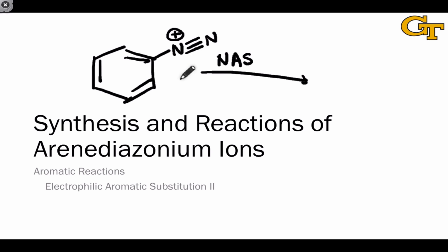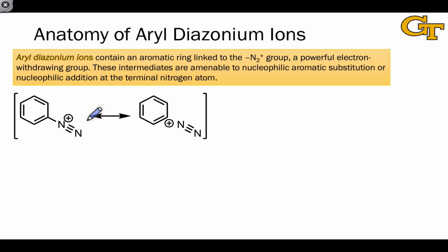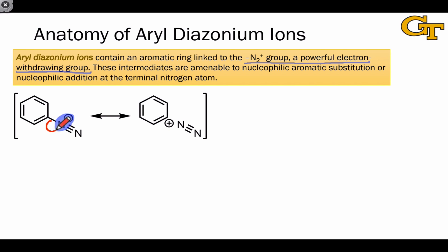Aryl diazonium ions are very easy to synthesize from aminobenzenes or anilines through a relatively straightforward process. The pi bond between the two nitrogens and the positive charge on the nitrogen linked to the aromatic ring emphasize that the N2-plus or diazonium group is a powerful electron-withdrawing group. And so aryl diazonium ions are generally heavily deactivated toward electrophilic aromatic substitution.